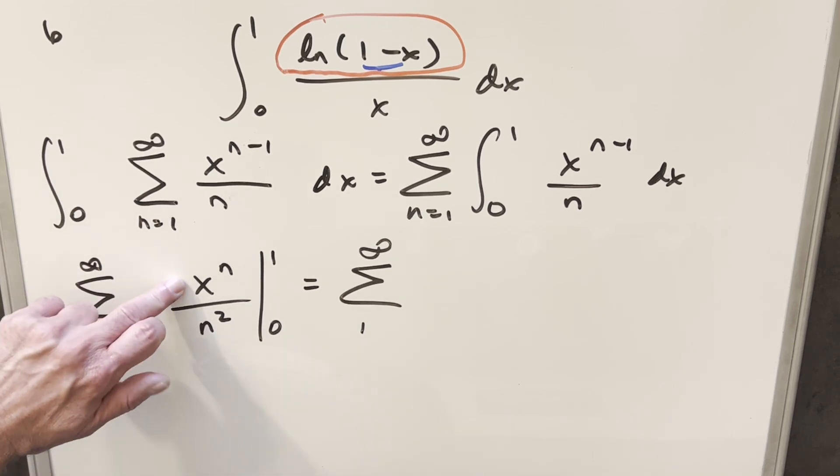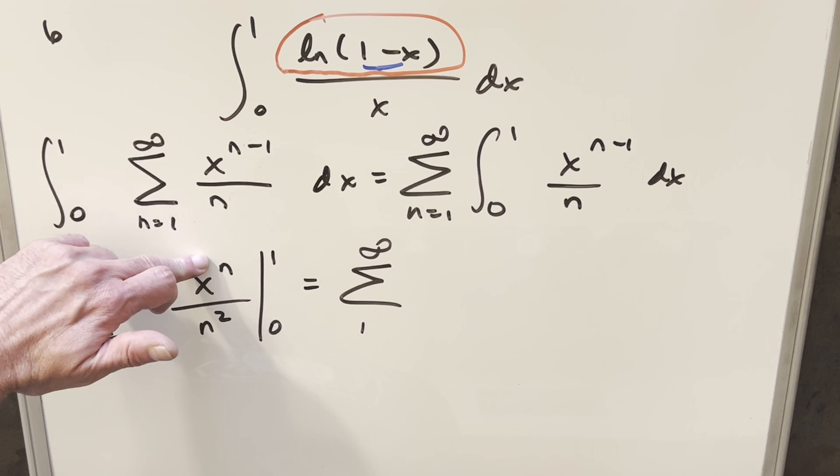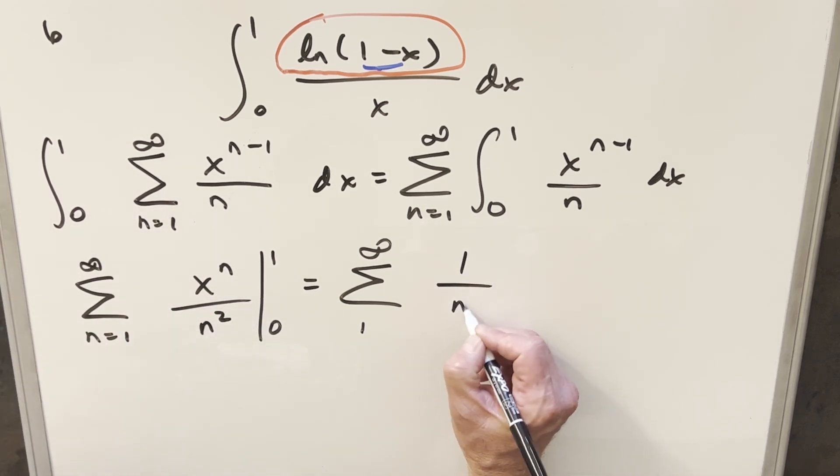But then when we evaluated zero, this is clearly just going to be zero. We plug a one in here. It doesn't matter what the exponent is. Now one to the n, that's just going to be one over n squared.